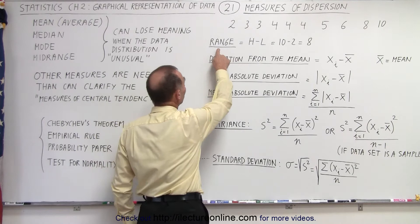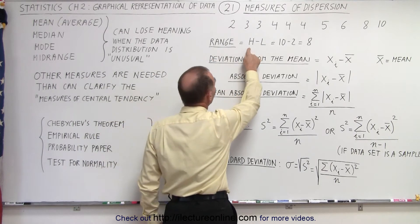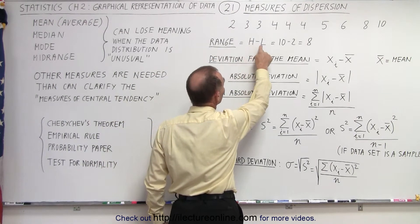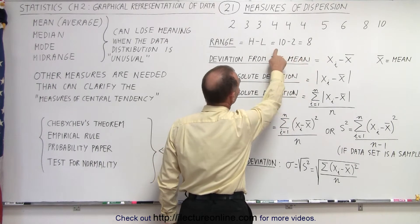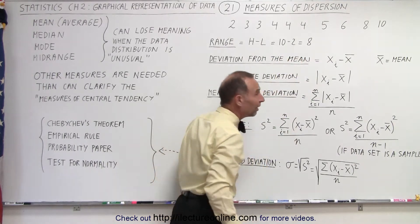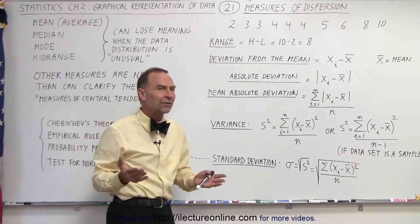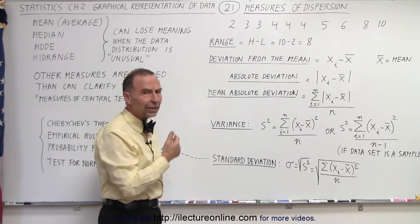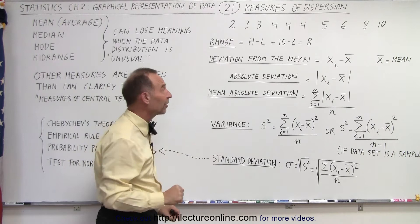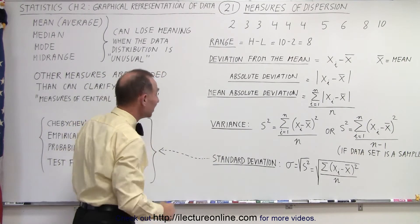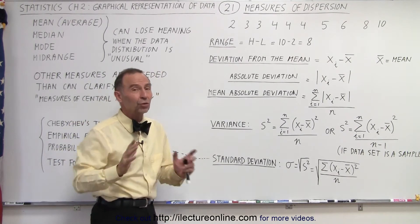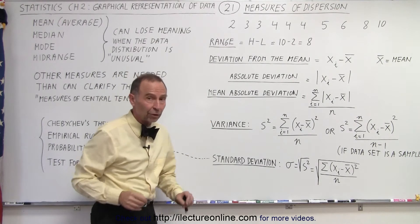First of all, the range. The range is simply the difference between the highest value and the lowest value of your data. In this case, 10 minus 2 equals 8. And of course, if that range is very large compared to the mean or the average, then we can say that we need to be very careful how we interpret the values. Even the median and the mode can be skewed by the fact that we have a very large range.